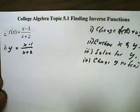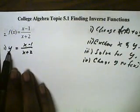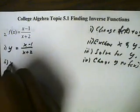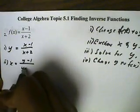Next, we want to exchange all the x's and y's. So step two, x equals y minus one all over y plus two.